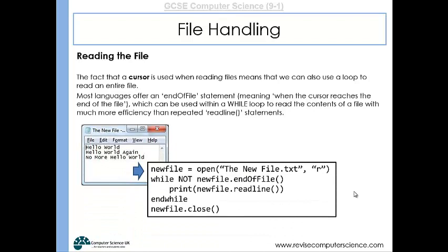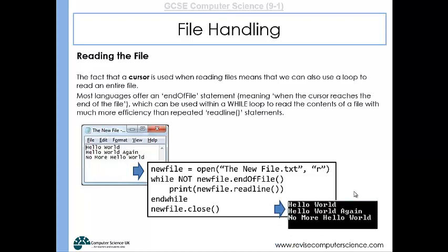If we were to use this example code - newfile equals open the newfile dot text in read mode, opening up the file in read mode, putting that into the file handler called newfile. Then whilst we're not at the end of that file, we can print out each line one after the other, resulting in that output.